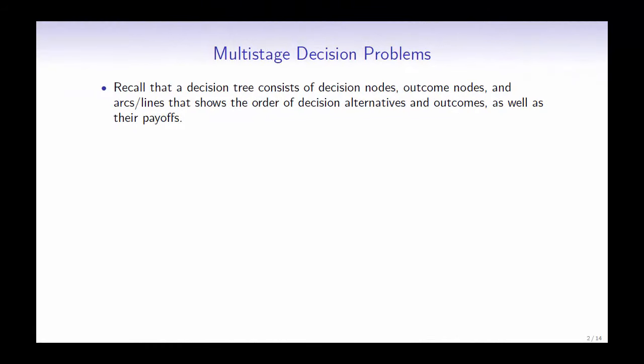Recall that a decision tree consists of decision nodes, outcome nodes, and arcs or lines that show the order of decision alternatives and outcomes, as well as their payoffs.